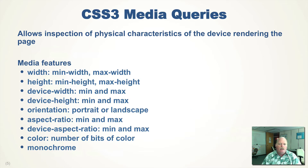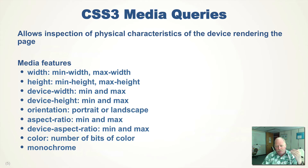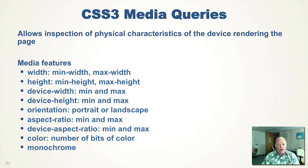In CSS 3, they added media queries, which allow you to get much more sophisticated in how you query the media that is rendering your device. You can pick min-width, max-width, the height of the device, the device width, orientation — whether it's landscape or portrait — the aspect ratio, how many bits of color, or whether you're doing it monochrome for printing. So the media queries in CSS 3 provide a much wider ability to select the styles you want to render based upon the device doing the display.